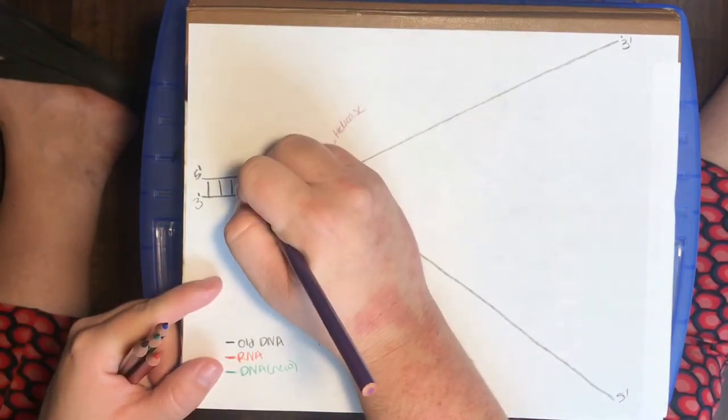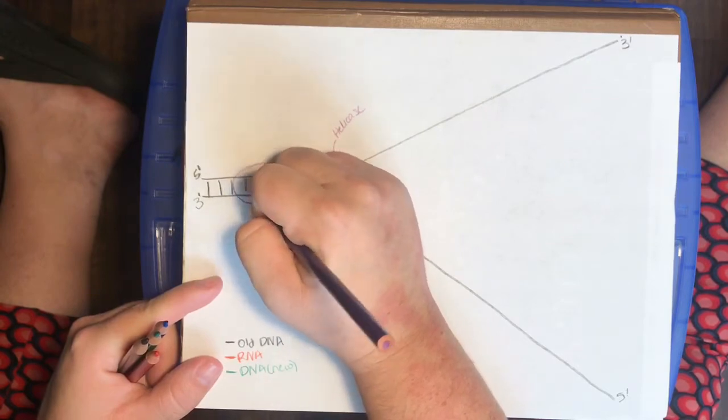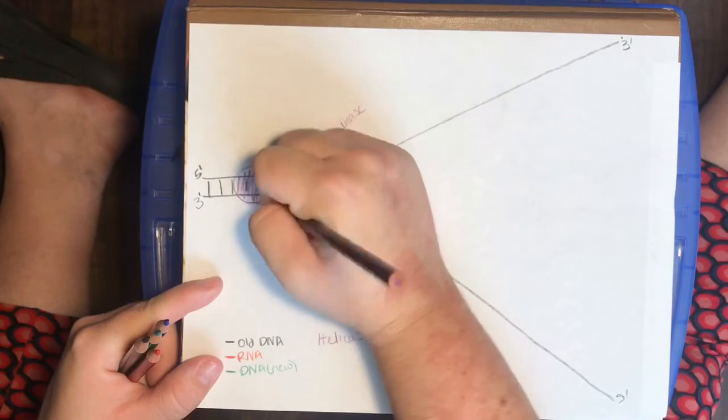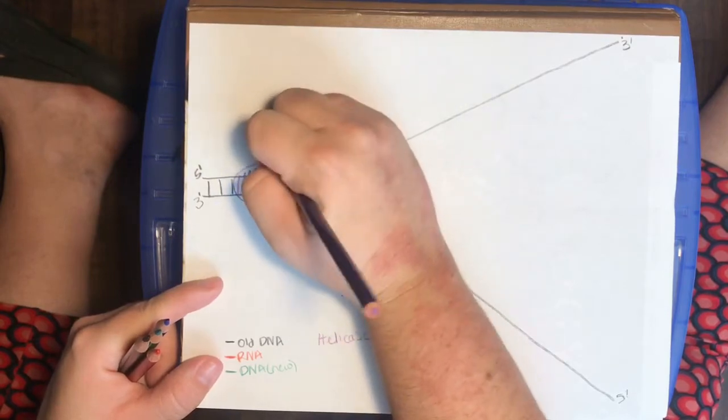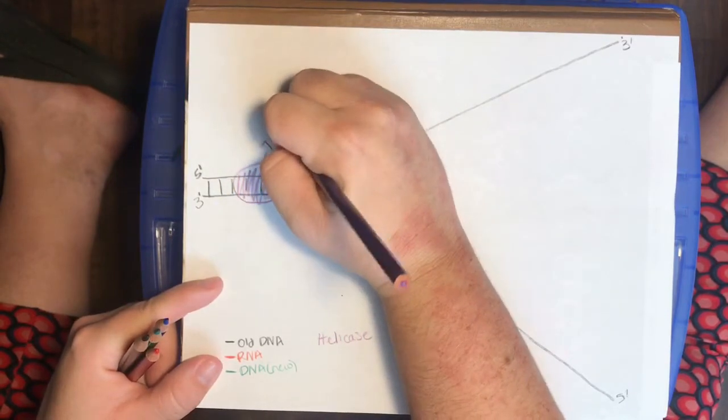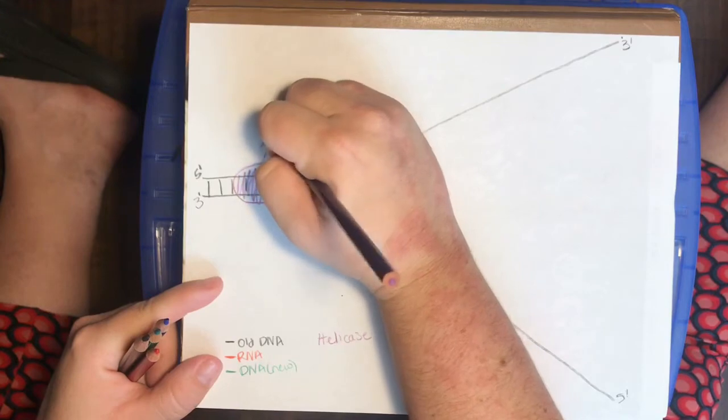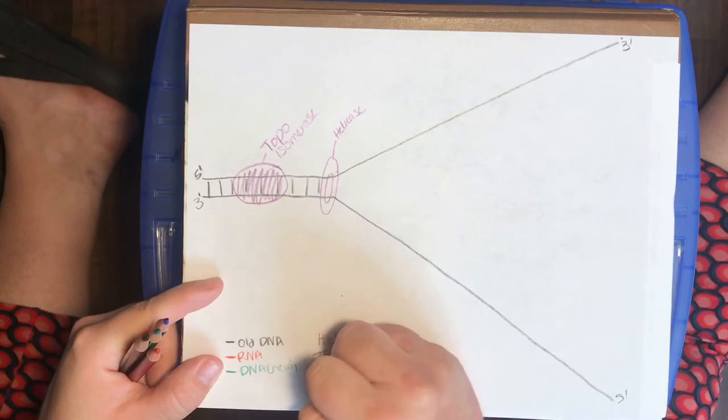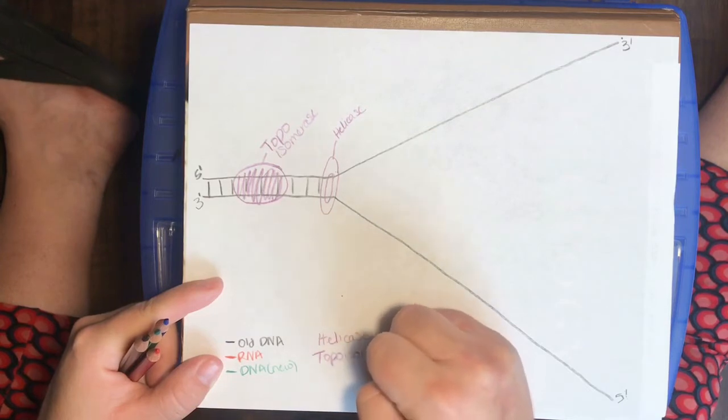So we have another enzyme that I'm going to depict sort of as this oval shape. And this, I'm going to color it in to make it a little more visible, is called topoisomerase.